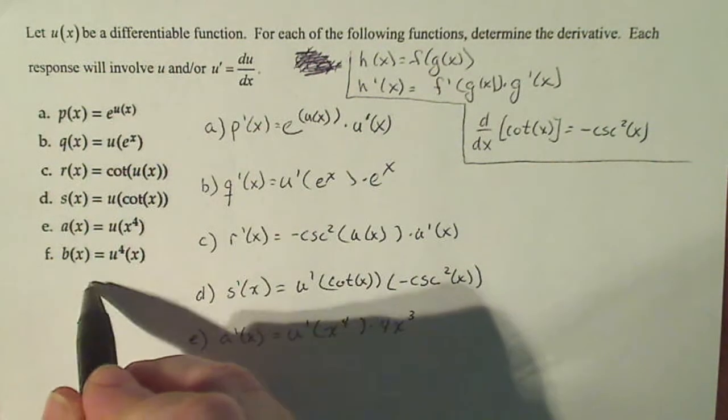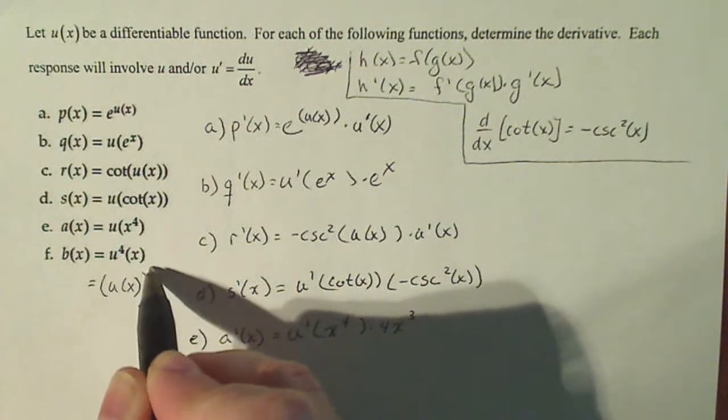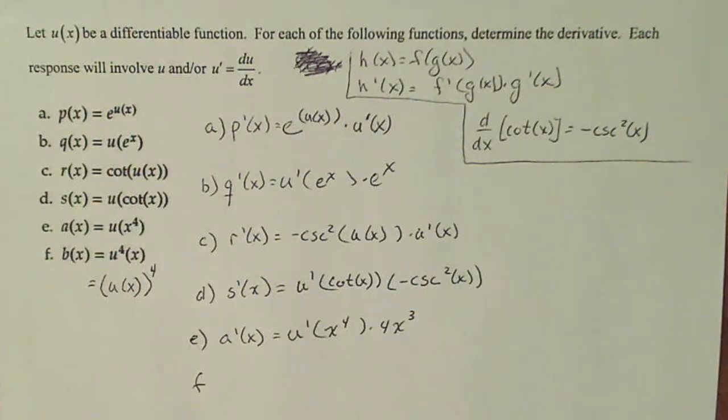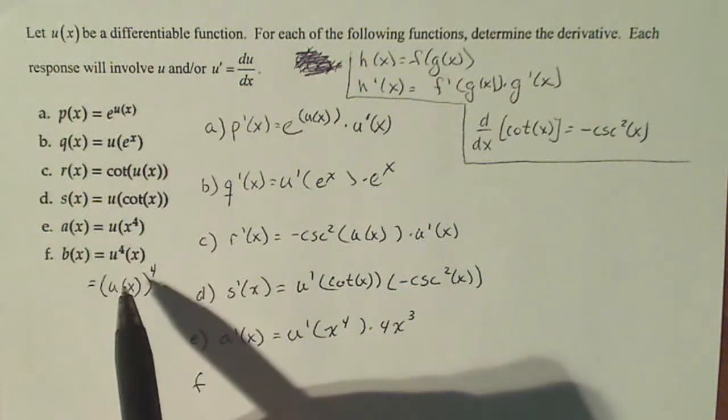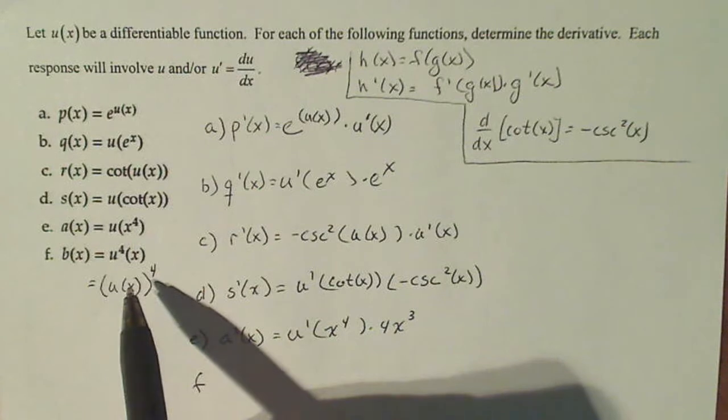Now f is written kind of strange, so I'm going to rewrite it like this. Might make you feel a little better. So the outside function now is x to the fourth. The inside function is u, or u.